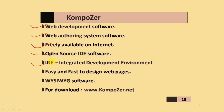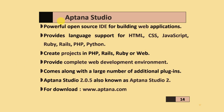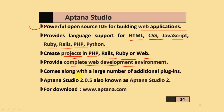IDE means Integrated Development Environment. It is easy and fast to design web pages because of WYSIWYG — What You See Is What You Get. The second software is Aptana Studio, a powerful open source IDE for building web applications. It provides language support for HTML, CSS, JavaScript, Ruby, Rails, PHP, and Python. You can create PHP, Rails, Ruby, or web projects. It provides a complete web development environment and comes with a large number of additional plugins. The version is Aptana Studio 2.0.5, and you can download it from aptana.com.